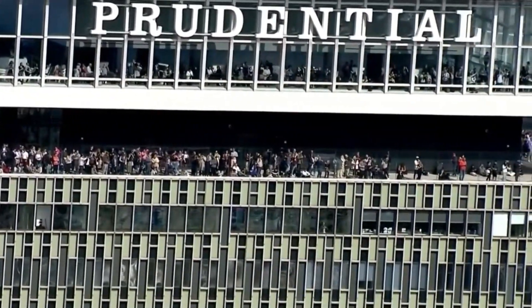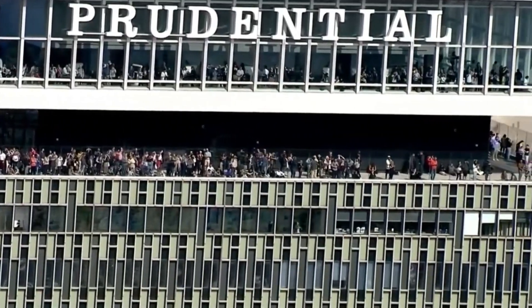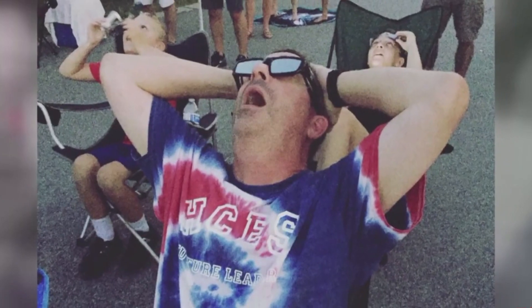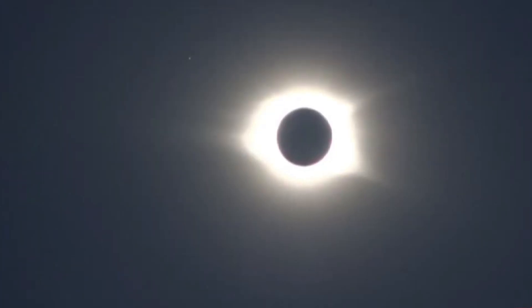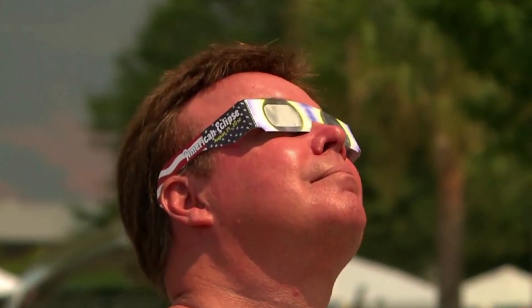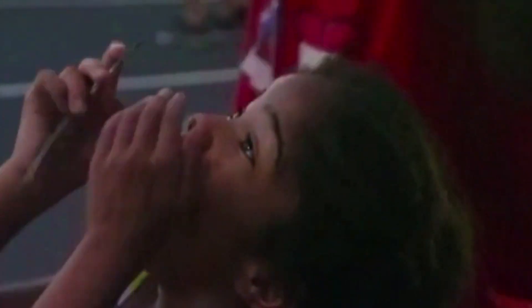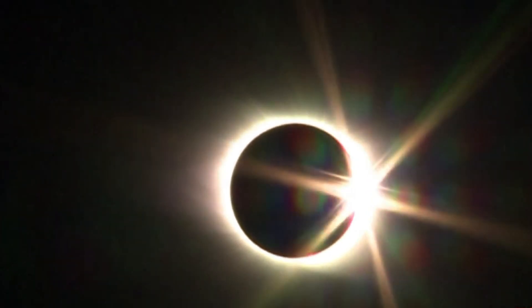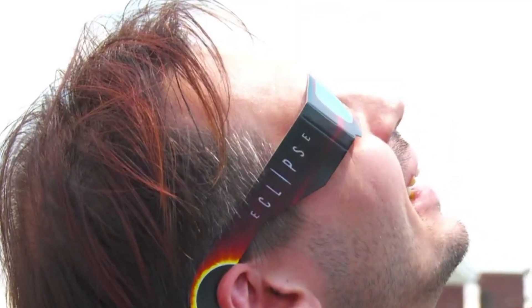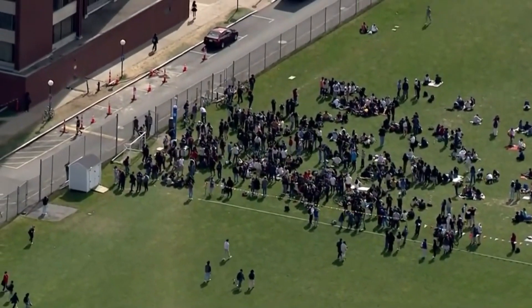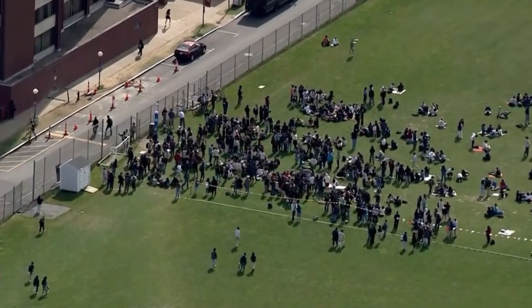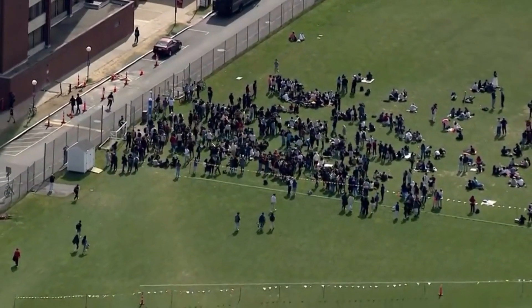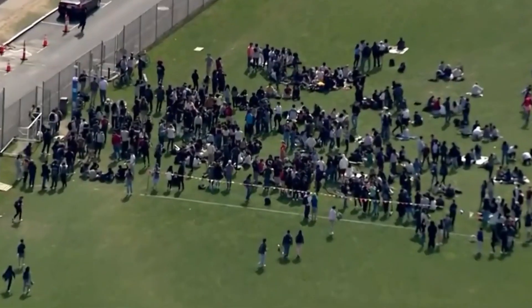Respect for the environment and local communities is paramount when participating in eclipse events. Be mindful of your surroundings, dispose of trash properly, and avoid disturbing wildlife or natural habitats. By showing consideration for the ecosystem and local residents, you can help preserve the beauty of the eclipse viewing area for future visitors. Lastly, be aware of designated viewing areas and follow instructions from authorities or event organizers. These designated zones are chosen for their optimal viewing conditions and safety considerations, so it's important to adhere to any guidelines provided to ensure a smooth and enjoyable eclipse experience.